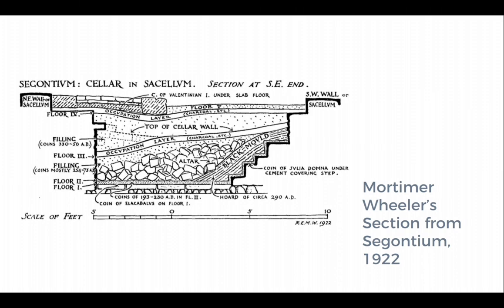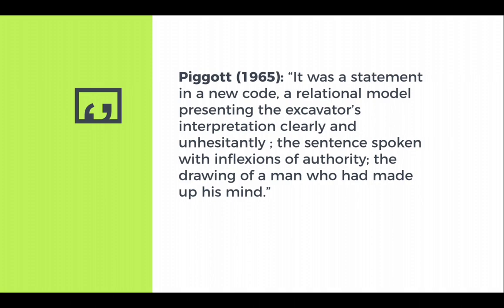Probably the most iconic section drawing is Mortimer Wheeler's section from Segontium. This is a very authoritative section in which you can see the outline of the trench and the different layers within it — the first step towards a real codification of section drawings in archaeology. Stuart Piggott says of it: 'It was a statement in a new code, a relational model representing the excavator's interpretation clearly and unhesitatingly. The sentence spoken with inflections of authority — the drawing of a man who had made up his mind. There is no quibble in Mortimer Wheeler's sections.'